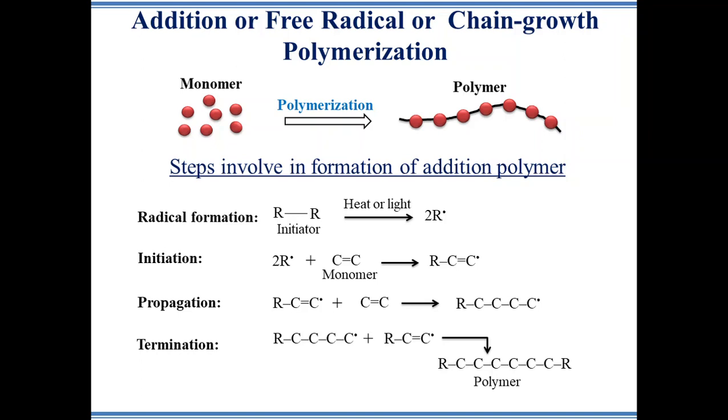In the propagation step, the active monomer reacts with a large number of monomers and forms a long chain free radical. Finally, in the termination step, two active chains react with each other to form a neutral polymer chain.